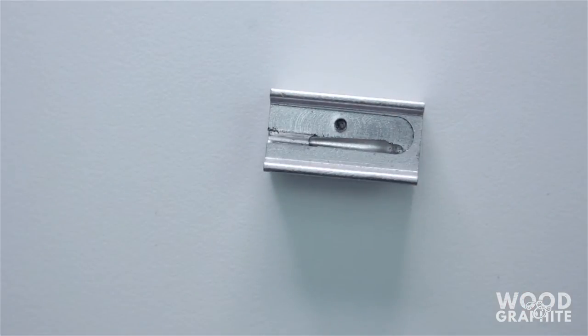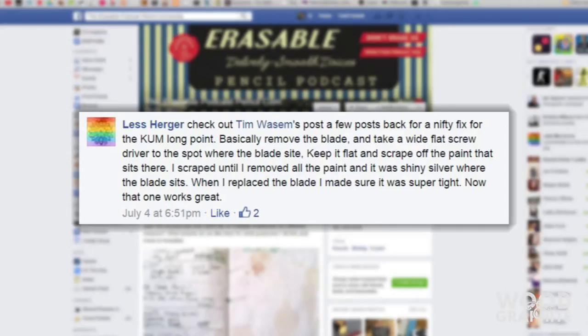Now, Les's original post on the group has been lost to time but she reiterated and she said, basically remove the blade, take a wide flat screwdriver to the spot where the blade sits, keep it flat and scrape off the paint that sits there. I scraped until I removed all the paint and it was shiny silver where the blade sits. When I replaced the blade, I made sure it was super tight, now that one works great.